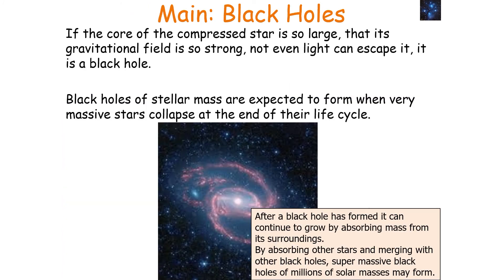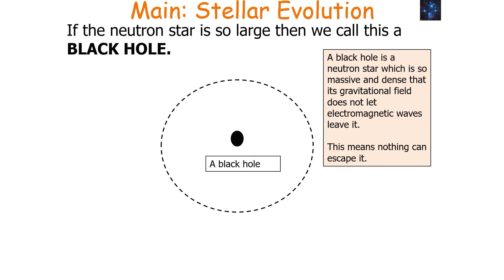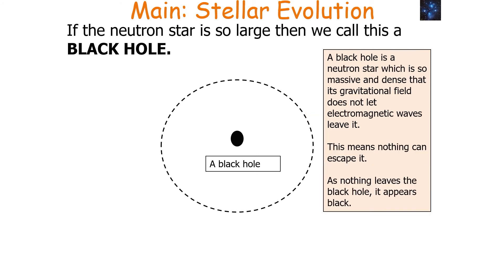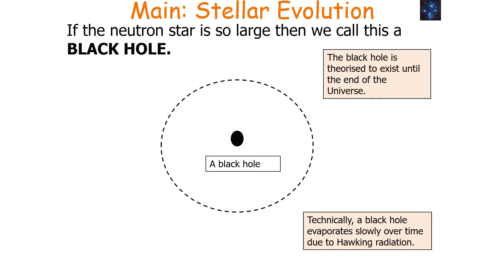The second possibility after a supernova is a black hole. If the core of the compressed star is so massive that its gravitational field is so strong that not even light can escape it, it is a black hole. Black holes of stellar mass are expected to form when very massive stars collapse at the end of their life cycle. A black hole is a neutron star so massive and dense that its gravitational field does not let electromagnetic waves leave it — so nothing can escape it, and it appears black. Technically, a black hole slowly evaporates over time due to Hawking radiation, but at A-level we can assume it exists until the end of the universe.